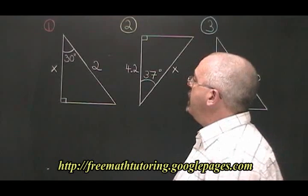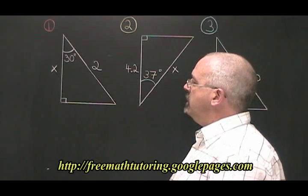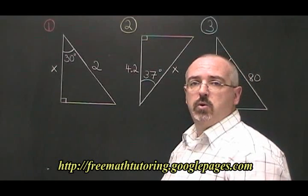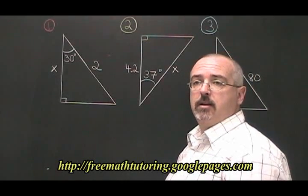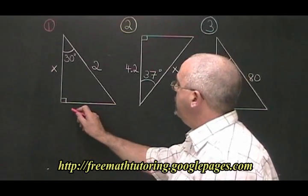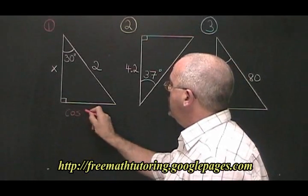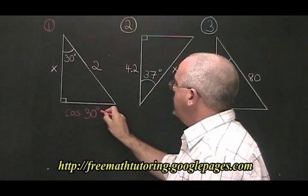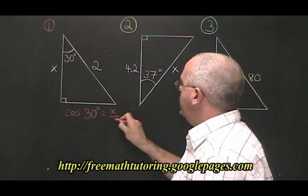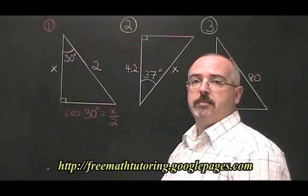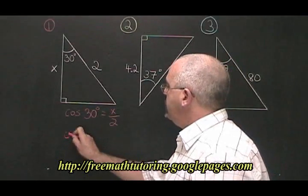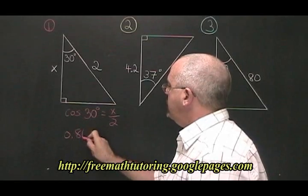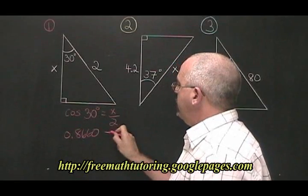In example 1, we have a 30 degree angle. Our hypotenuse is 2, and we want to know how long the adjacent side is. Filling in our CAH formula, we have cos of 30 degrees equals x over 2. We replace cos of 30 degrees with 0.8660 in our formula.